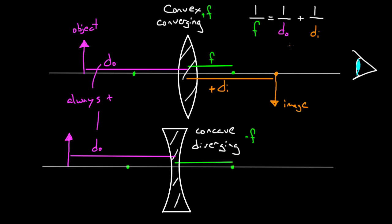For the diverging case, maybe the image ended up over here on the same side as the object. Image distance is from the center of the lens to where the image is. My eye is still on the right side, looking through the lens at the object. But this image is on the opposite side of the lens as my eye — or the same side as the object — so this would be a negative image distance. I'd have to plug in a negative number. If I got a negative number out of the formula for DI, I'd know the image is formed on the opposite side of the lens as my eye.